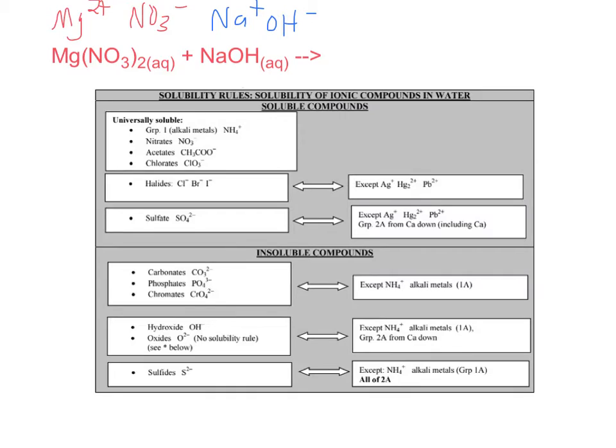Now, in this reaction, the precipitation reaction, the cation from one ionic compound goes with the anion of the other. So, on this side, I'm going to have Mg2+ and OH 1- coming together. And on the other side, I'm going to have the cation here with the anion there. So, I'm going to have Na+ and NO3 1-. Those are just my ions.